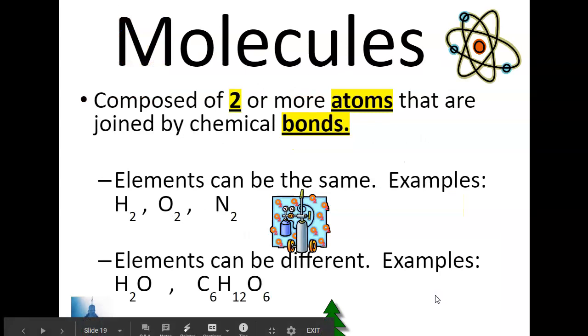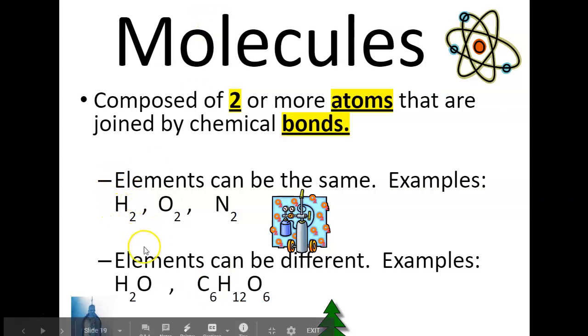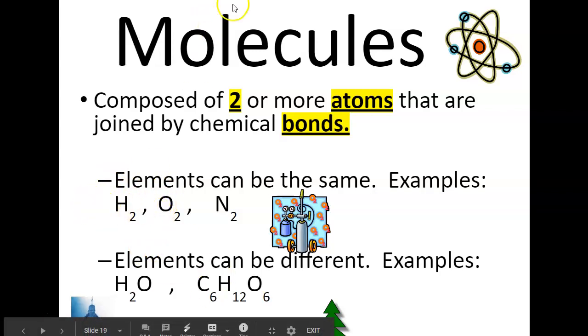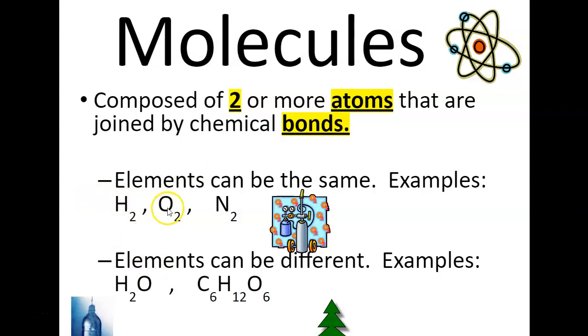So, what are molecules? Molecules are composed of two or more atoms that are joined by chemical bonds. So, for example, hydrogen gas is two hydrogen molecules. Well, a hydrogen molecule is two hydrogen atoms bonded together.